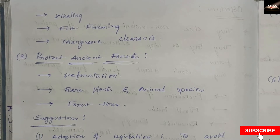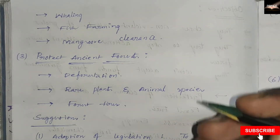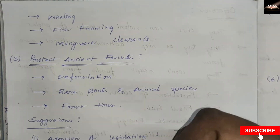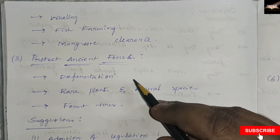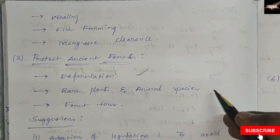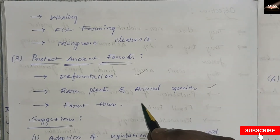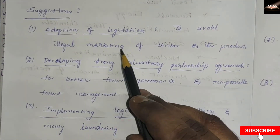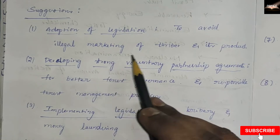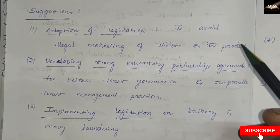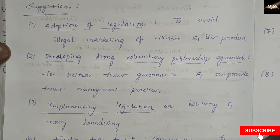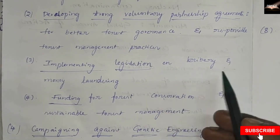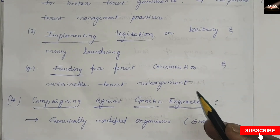Greenpeace works to protect ancient forests, which are truly diverse and include boreal forests, temperate forests, tropical forests, coniferous forests, and broadleaf forests. They protect these forests from deforestation and protect plant and animal species, including from forest fires. Their suggestions include adoption of legislation to avoid illegal marketing of timber and its products, developing strong voluntary partnership agreements between governments and voluntary organizations for better forest governance, implementing legislation on bribery and money laundering, and funding for forest conservation and sustainable forest management.